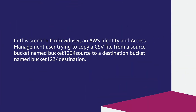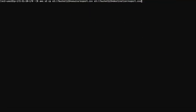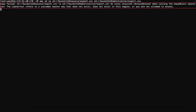In this scenario, I am KCVit user, an AWS Identity and Access Management user, trying to copy a CSV file from a source bucket named bucket1234-source to a destination bucket named bucket1234-destination. These two buckets are under the same AWS account. But when I log into the AWS CLI with the credentials of user KCVit user to run the copy command, I get the following Access Denied error message.